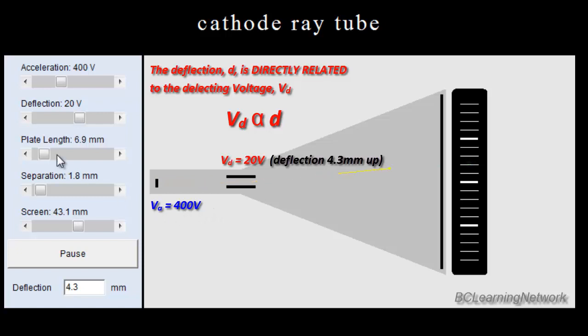So let's see what happens when I drop my acceleration in half. I've gone from an accelerating voltage of 400 volts down to an accelerating voltage of 200 volts. The electron is now traveling slower. Let's run it. Travels slower and it deflects up higher because it spends more time between the deflecting plates. Now my original deflection was 4.3 when the accelerating voltage was 400. If I half the accelerating voltage, my deflection doubles.